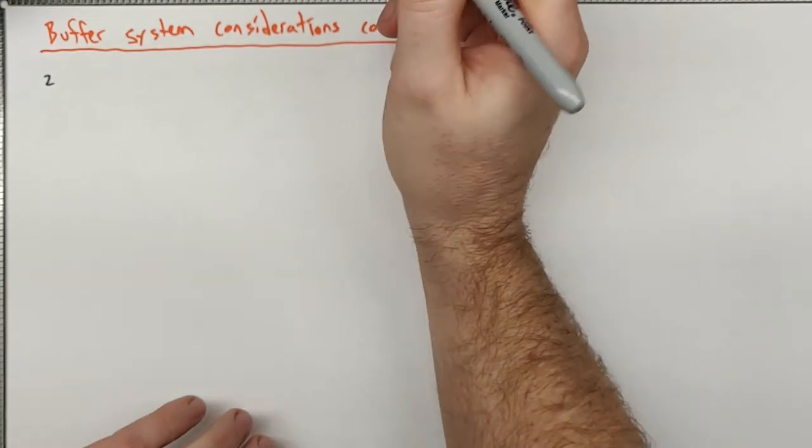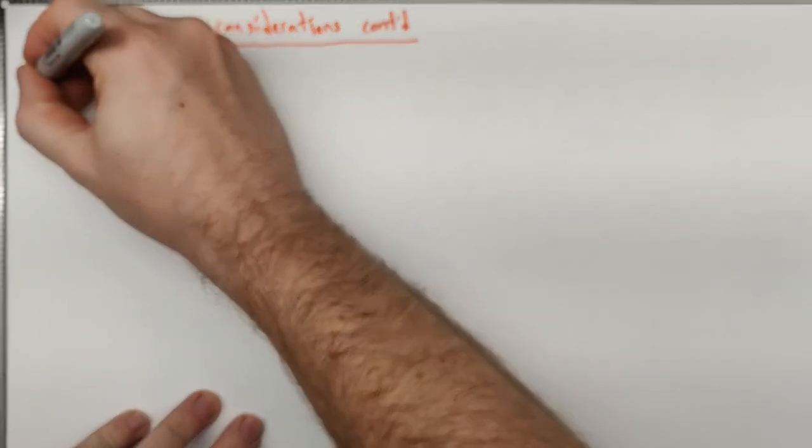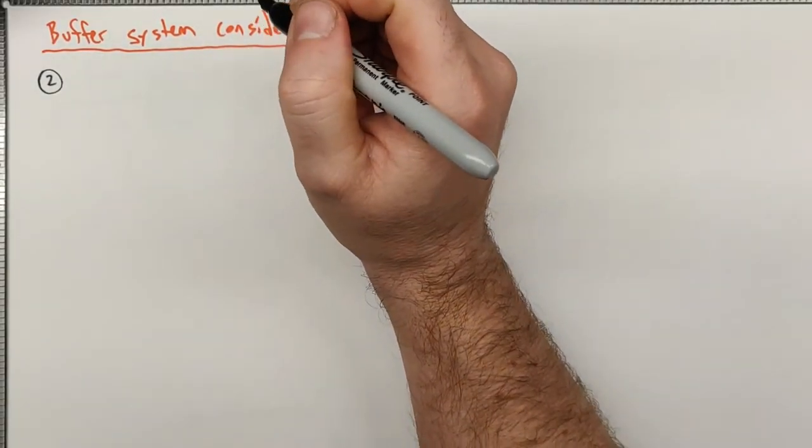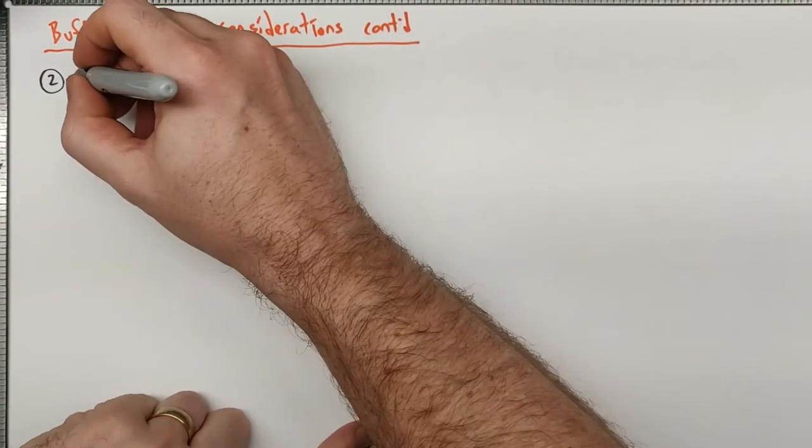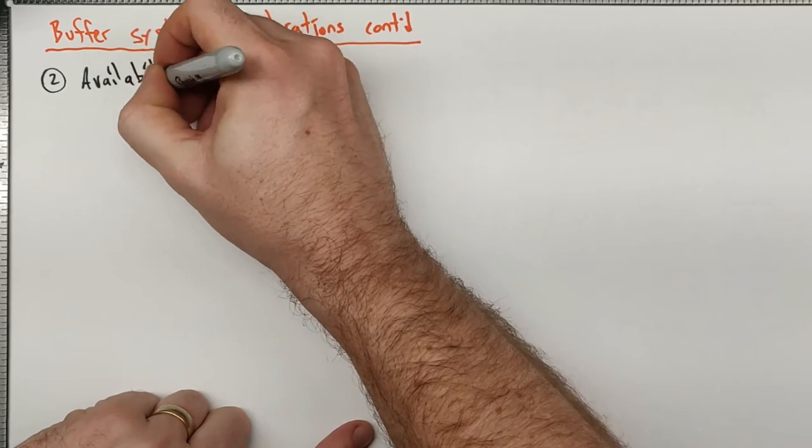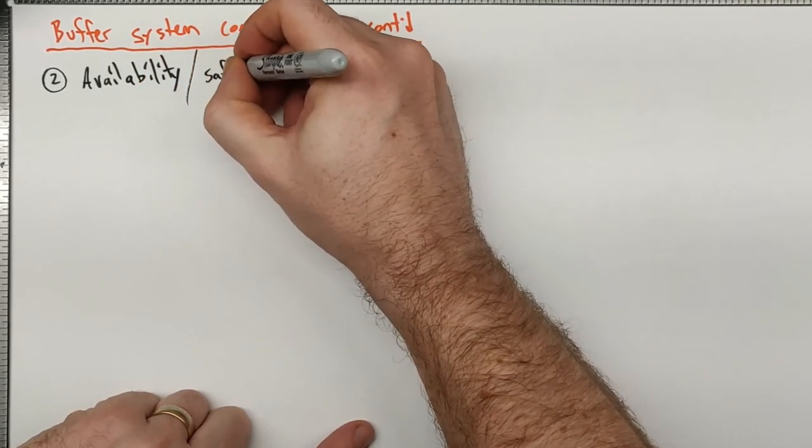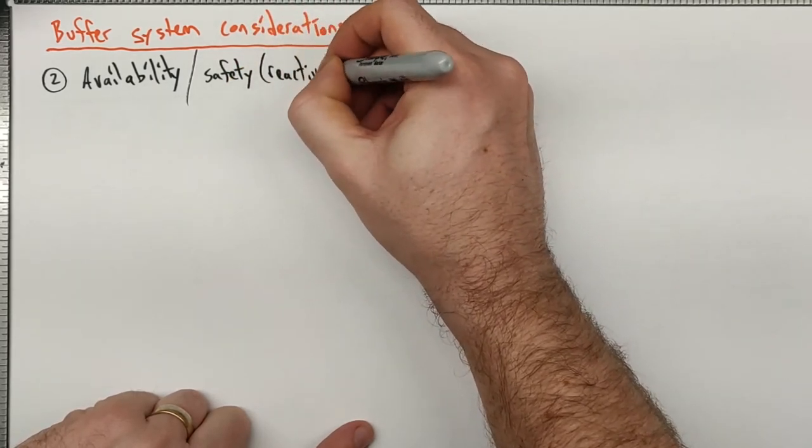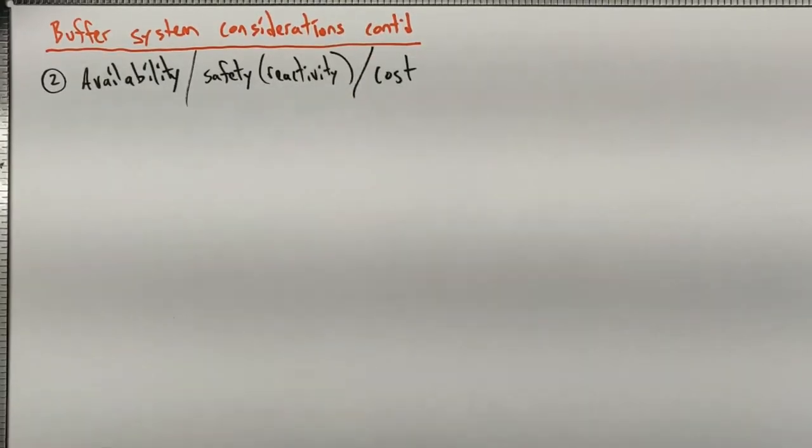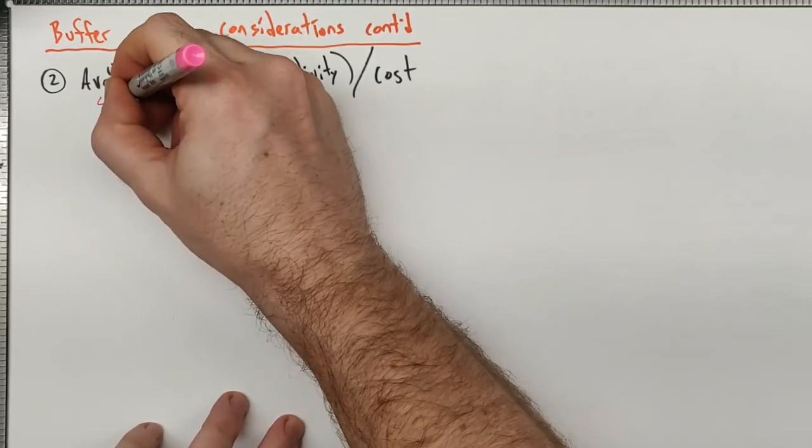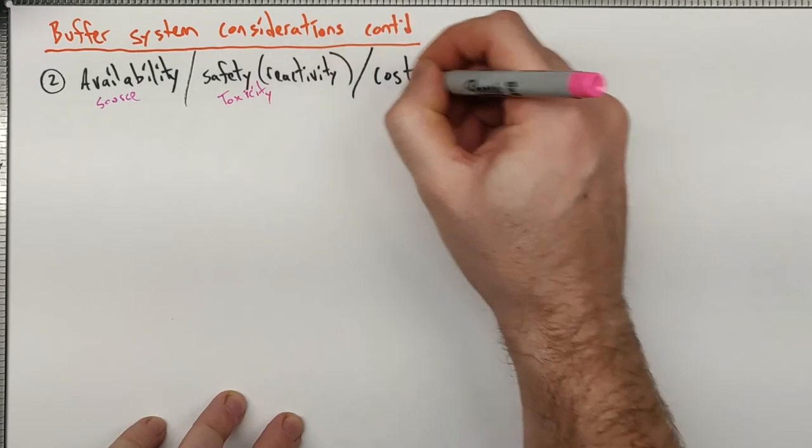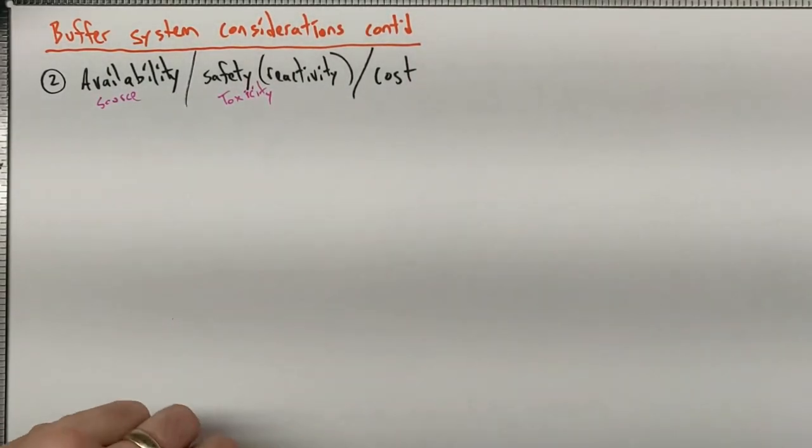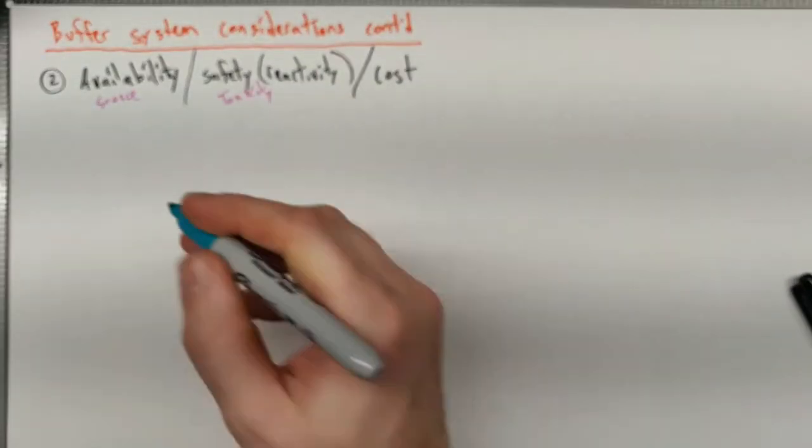The next big factor to consider in looking for a buffer system is the availability and reactivity and cost. I know that sounds like three, but I'm going to declare it's one. So when you're considering your buffer system, you may look at a pKa and say these are my ideal pKa options. They're going to get me closest to what I want for my actual pH. But you then need to take into consideration things like availability and safety slash reactivity and cost. Something that is very important to consider is the idea that you technically only need A- or HA.